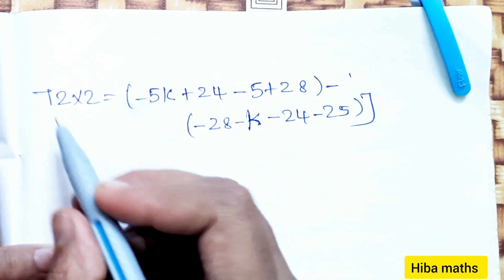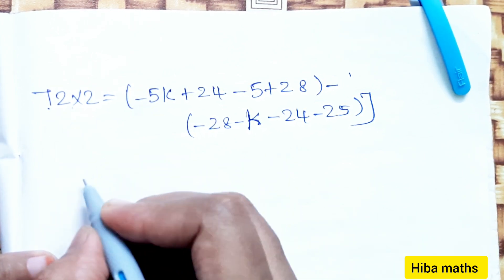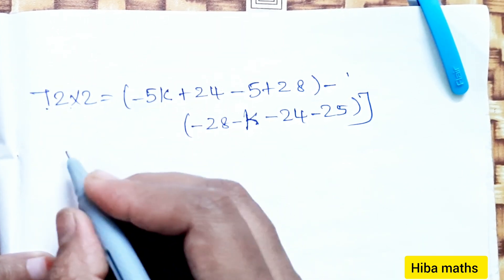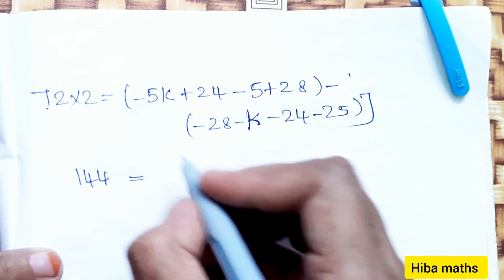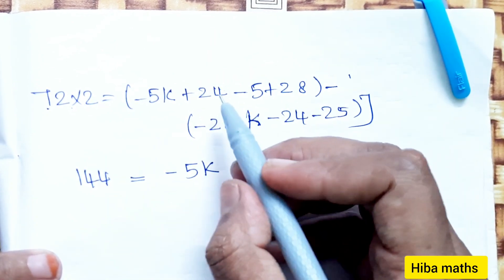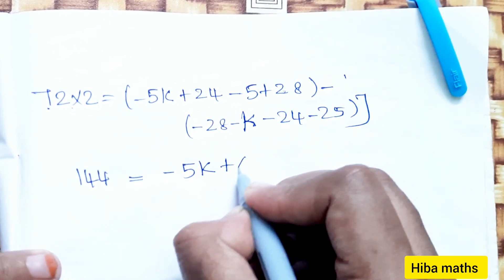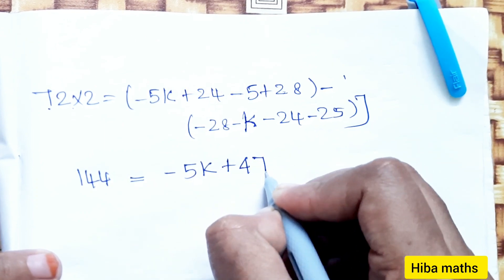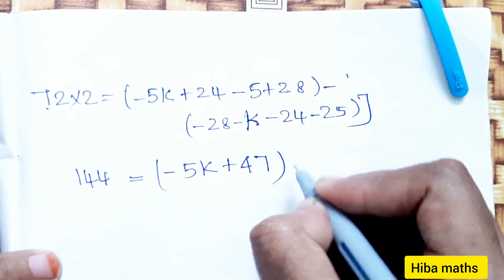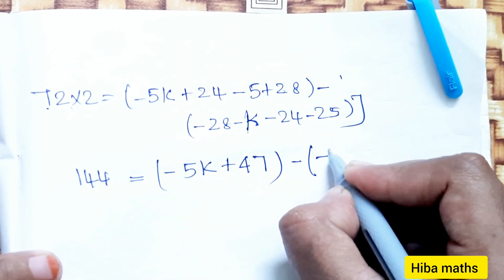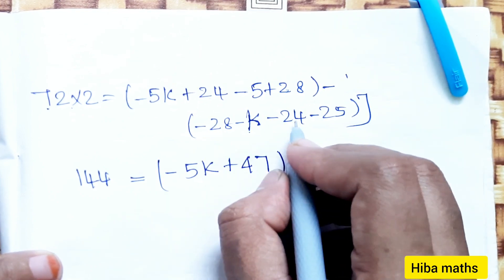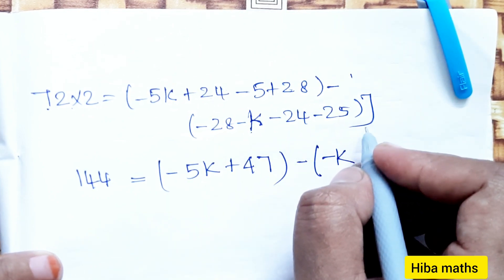Next, 72 into 2, then 144. This solves to -5K plus 47. So minus K, this solves to minus 77.